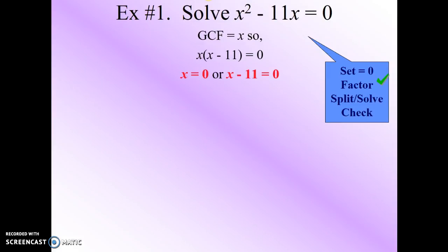Next, we want to set each factor equal to 0 and solve. So in the second equation, we will add 11 to both sides, and we end up with x equals 0 or x equals 11.